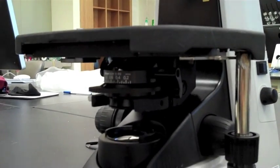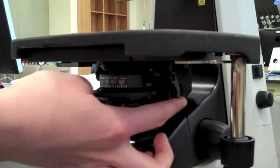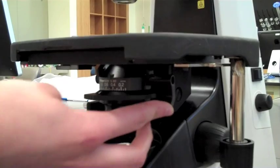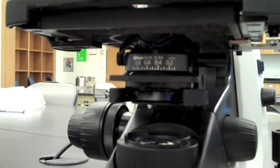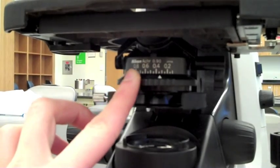The condenser lever restricts the diameter of incoming light. At the 2x objective, it narrows the field of vision. At higher objectives, it is useful for amplifying brightness. The condenser adjusts the light for each objective lens. The number on the condenser should match the number on the objective lens.